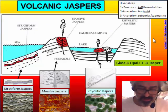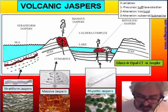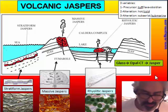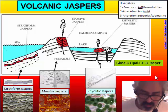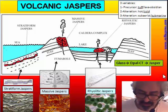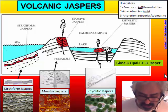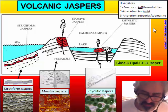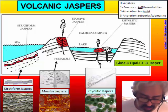In volcanic jaspers everything depends on glass. Volcanic areas are the best places to look for jaspers and in general are where more silica is in circulation in the form of colloidal solution. In volcanic areas it is also possible to find chalcedony, agate, and different kinds of opals, because there is a lot of silica in circulation.